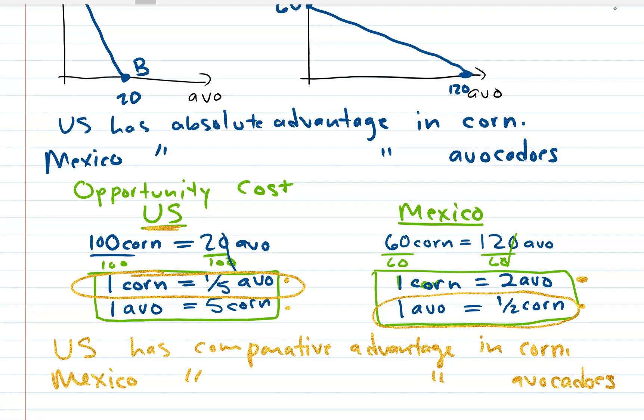In the next video we're going to talk about whether they should trade. Even though both countries are capable of producing both corn and avocados, we're going to show that if they do trade, they'll not only produce more but also be able to consume more. Stay tuned for the next video on that topic.